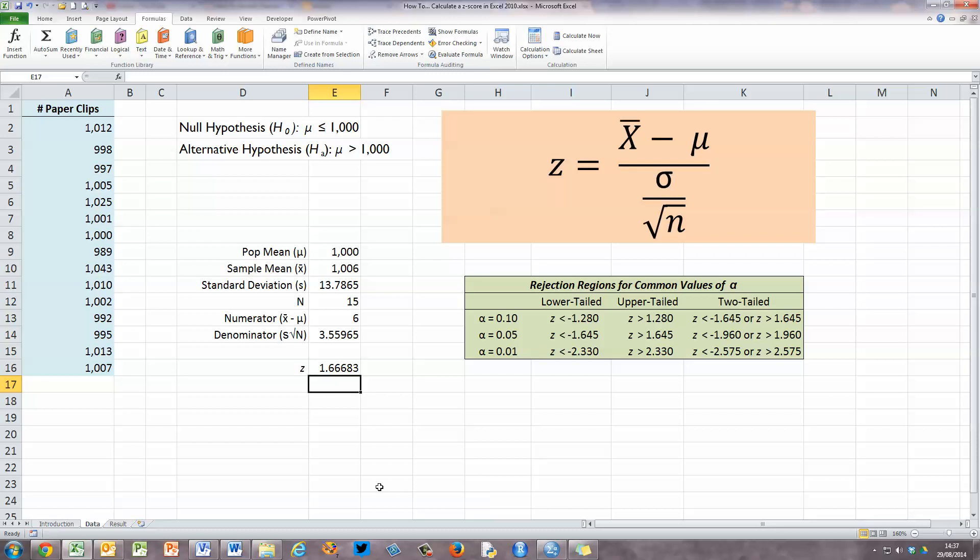Now, what does that mean? Over here on my right-hand side, I've got the rejection regions for common values of alpha. And our values of alpha here are 0.10, representing 10%, 0.05, representing 5%, and 0.01, representing 1%. Now, normally, we would go for 5% significance. So that's the middle one here. And we've seen from our null hypothesis that this is a one-tail test. And our value of 1.66683, we can see in our middle over here, slightly exceeds the critical value in the upper tail at the 0.05 value of alpha. The z there is 1.645.